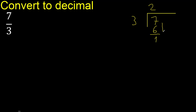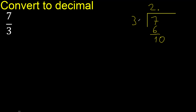Here there is no number, therefore complete — always complete with 0. Here, with a point: 0 point. Ok, 3 multiplied by 4 is greater. 3 multiplied by 3 is 9. Subtract.